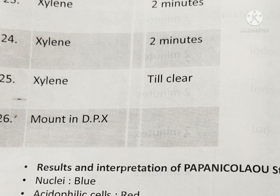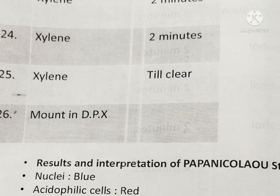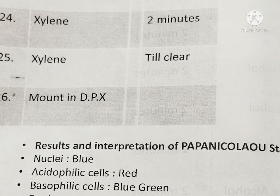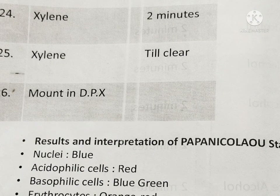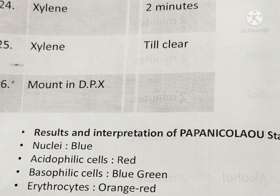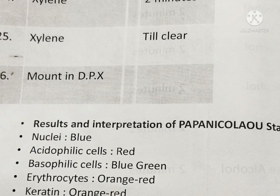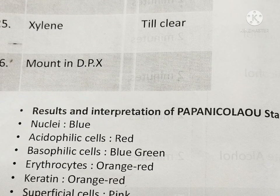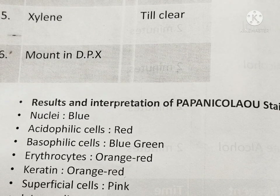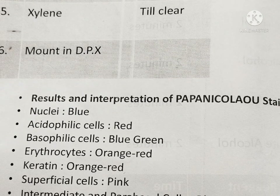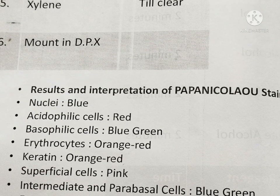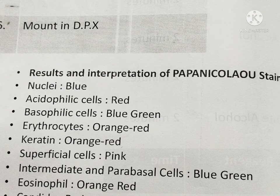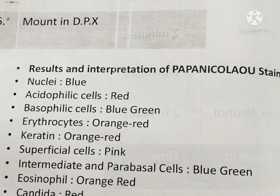Observe the slide. Nuclei appear in blue color. Acidophilic cells in red. Basophilic cells blue-green. Erythrocytes orange-red. Keratin orange-red. Superficial cells pink. Intermediate and parabasal cells blue-green. Eosinophils orange-red. Candida red. Trichomonas gray-green.